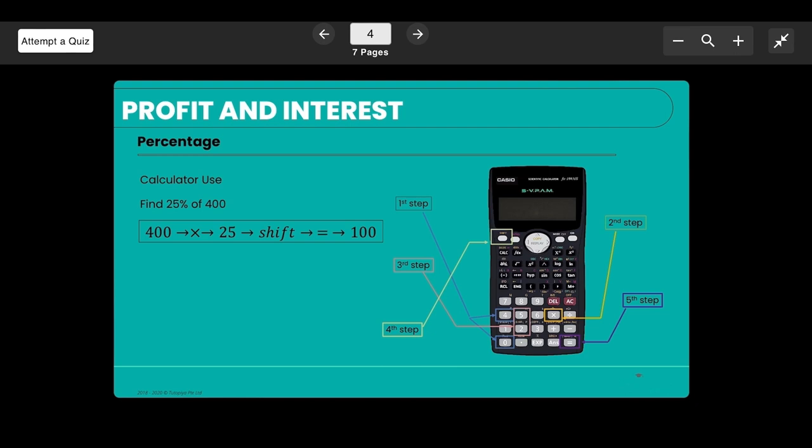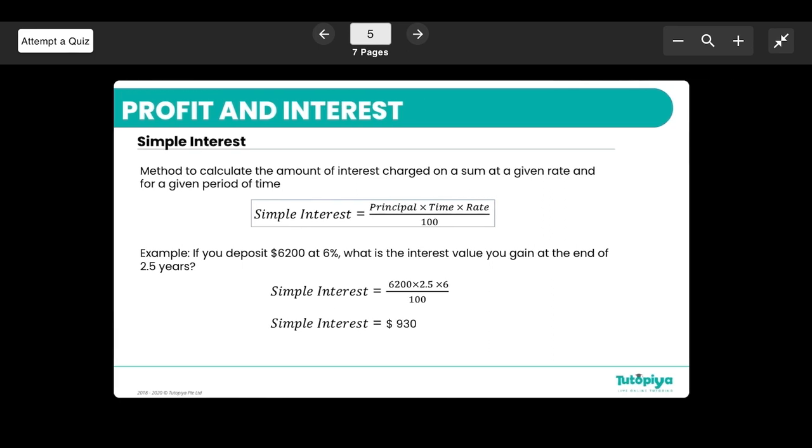And here's a bit of calculator tips for the day, so this is how you can enter fractions and percentages into your calculator. Coming to simple interest: simple interest is a common thing we find when we are investing money. How do we find simple interest? There's a basic formula that you need to know: simple interest equals the principal amount times the time times the rate over 100.